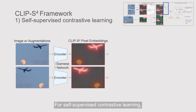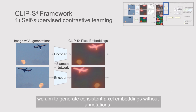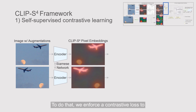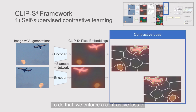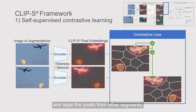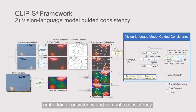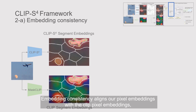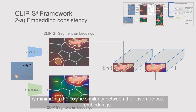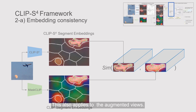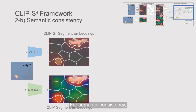For self-supervised contrastive learning, we aim to generate consistent pixel embeddings without annotations. To do that, we enforce a contrastive loss to attract pixels from the same segments, attract the same pixels in any augmented views, and repel pixels from other segments. For vision-language model-guided consistency, we introduce two consistency types: embedding consistency and semantic consistency. Embedding consistency aligns our pixel embeddings with the CLIP pixel embeddings by minimizing the cosine similarity between their average pixel embeddings.